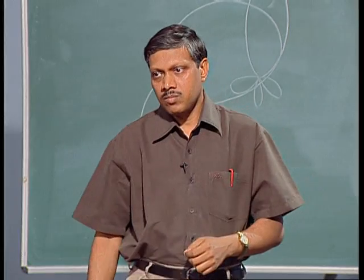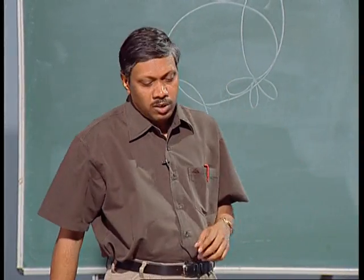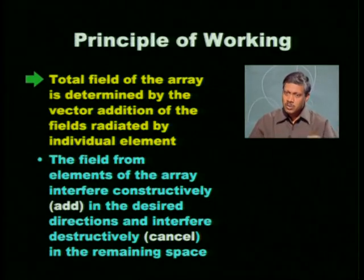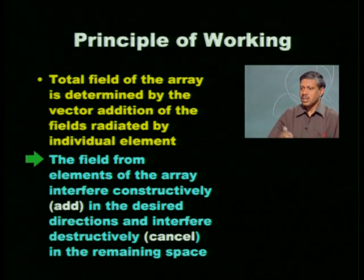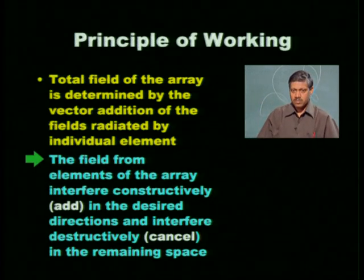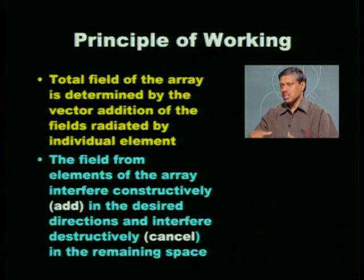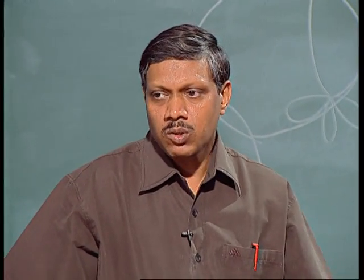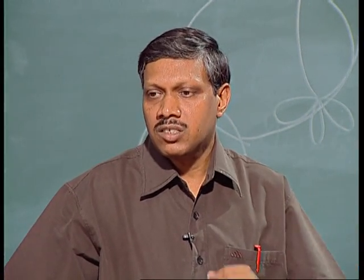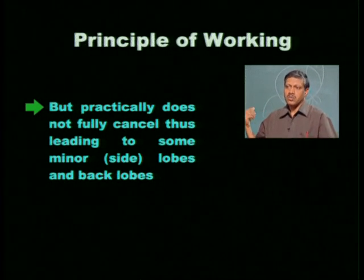How does the antenna array work? The total field of the array is the contribution of each individual element's field. The interference is constructive at the point of interest and fully destructive at unwanted points. Practically, you will have some side lobes and back lobes because complete cancellation of the signal in unwanted directions is not fully possible.